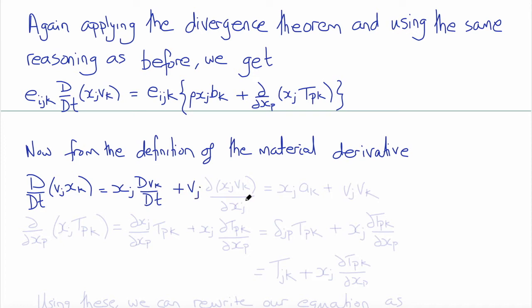plus VJ times the partial derivative of VK del XJ. So this first term is the acceleration, XJ times the acceleration, AK. And the second term is VJ times VK, since del XJ of VK with respect to XJ is VK.